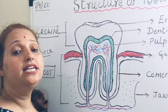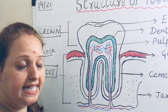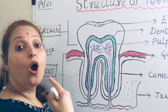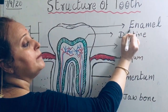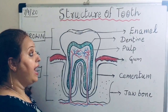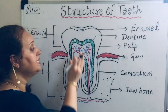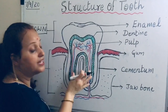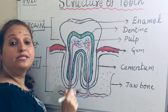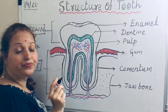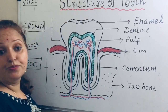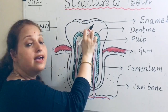Now let us see each and every part of the tooth in detail. The visible white portion of your teeth is called enamel. It is the hardest part of the tooth and also the outermost covering. Its main function is to protect the internal part of the tooth.